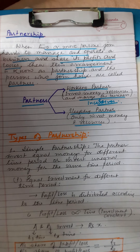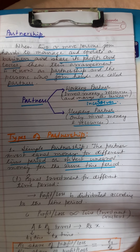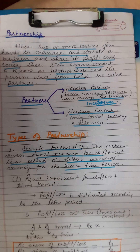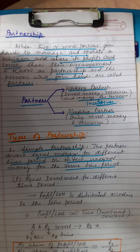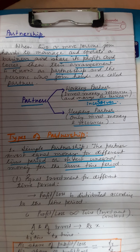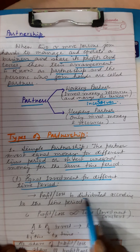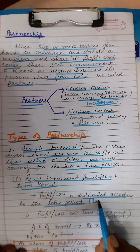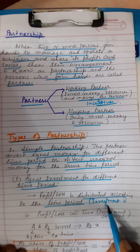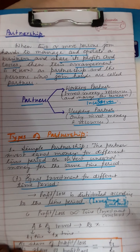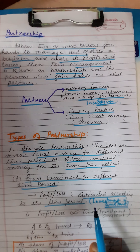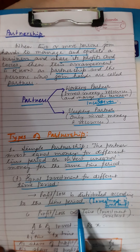Now, types of partnership. The first type is simple partnership, where partners invest equal money for different time periods, or invest unequal money for the same time period. In the first case — equal investment for different time periods — the profit and loss is distributed according to the time period, since investment is constant and profit is proportional to time.